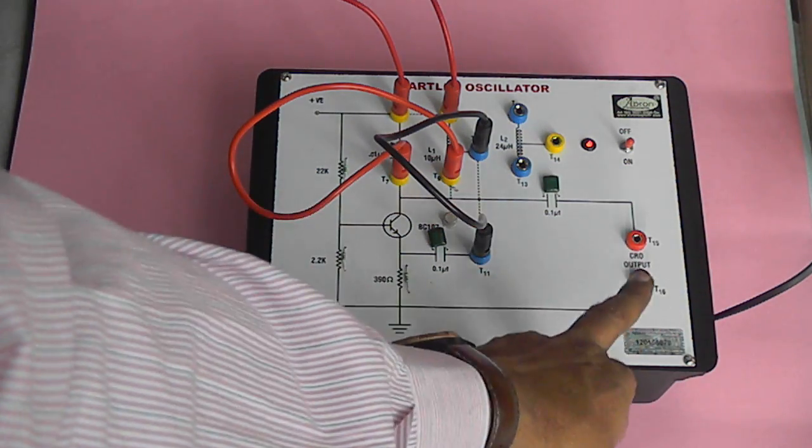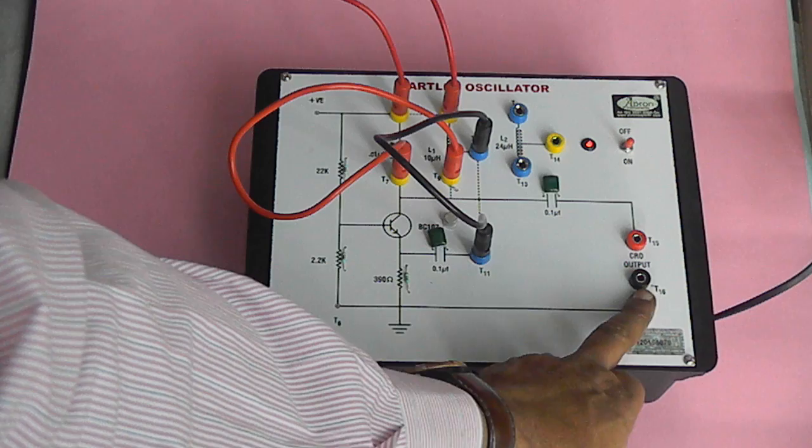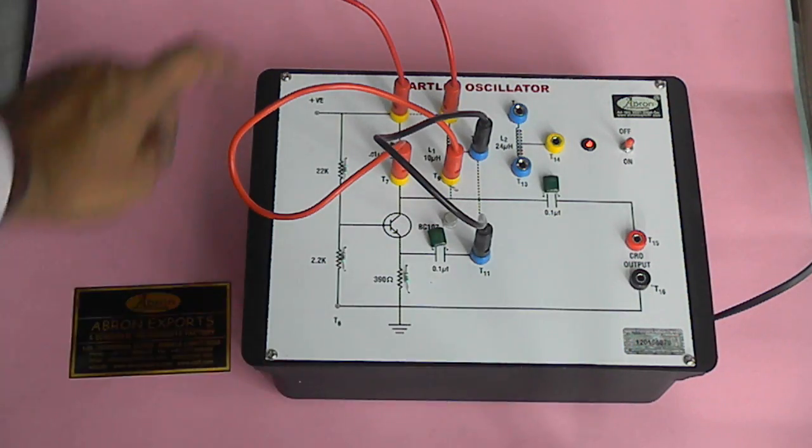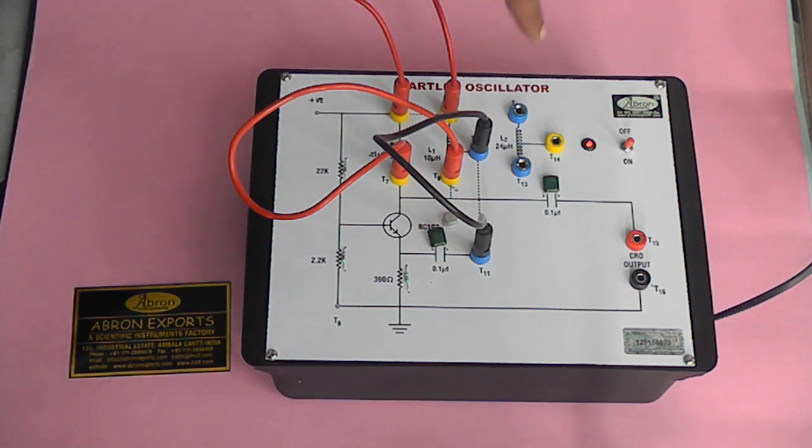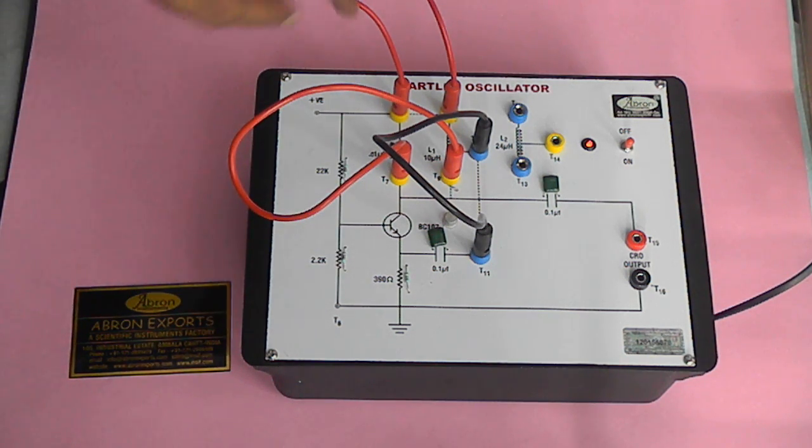You can connect the CRO to these two terminals. There is one inductance here, 10 microhenry and 24 microhenry. Two inductances are there, both are to be connected to the circuit.